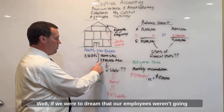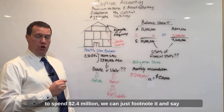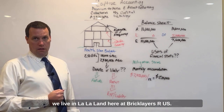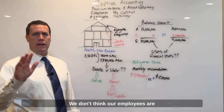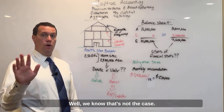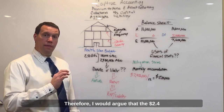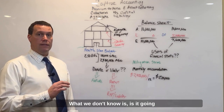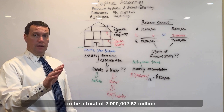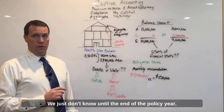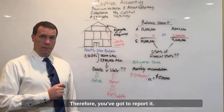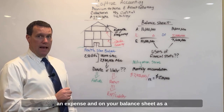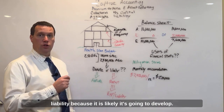If we were to dream that our employees weren't going to spend $2.4 million dollars, we can just footnote it and say we live in la-la land and don't think our employees are ever going to spend money. But we know that's not the case. Therefore, I would argue that the $2.4 million dollars is a very likely likelihood of occurring. What we don't know is whether it's going to be a total of $2 million, $2.6 million, or $3 million — we just don't know until the end of the policy year. Therefore, you've got to report it on your P&L as an expense and on your balance sheet as a liability, because it is likely it's going to develop.